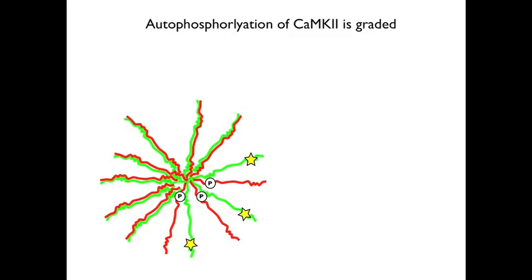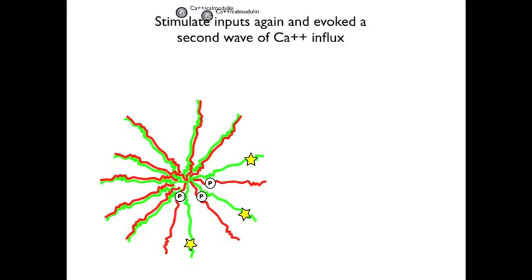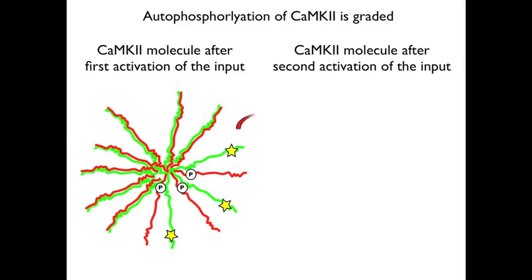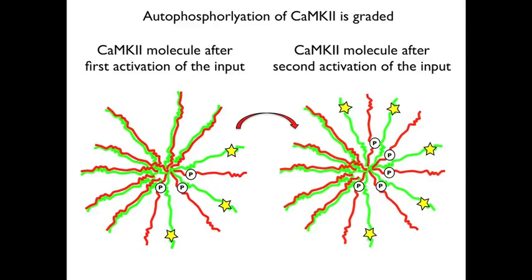The autophosphorylation of the entire CAM kinase 2 molecule is not all-or-none, but rather is graded. For example, imagine a moderately large calcium influx that caused the autophosphorylation of three subunits. Now imagine a second calcium signal is evoked, causing two additional neighboring subunits to open and become autophosphorylated. Due to the second wave of calcium, there are additional autophosphorylated subunits, and thus the activity of the kinase is more potent than it was after only the first wave of calcium influx.